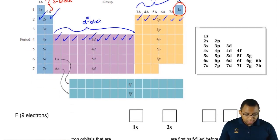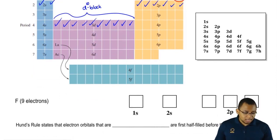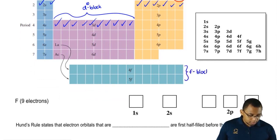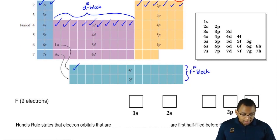Then finally down here with the lanthanides and the actinides. These are our F block. F can hold up to 14. So if you count this, you'll get 14 total. So the periodic table basically is arranged in a way where this makes sense.